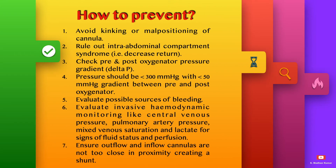How to prevent this: avoid kinking or malpositioning of the cannulas. Rule out intra-abdominal compartment syndrome, which may cause decreased return. Check pre and post oxygenator pressure gradient — pressure should be maintained below 300 mmHg with below 50 mmHg gradient between pre and post oxygenator.